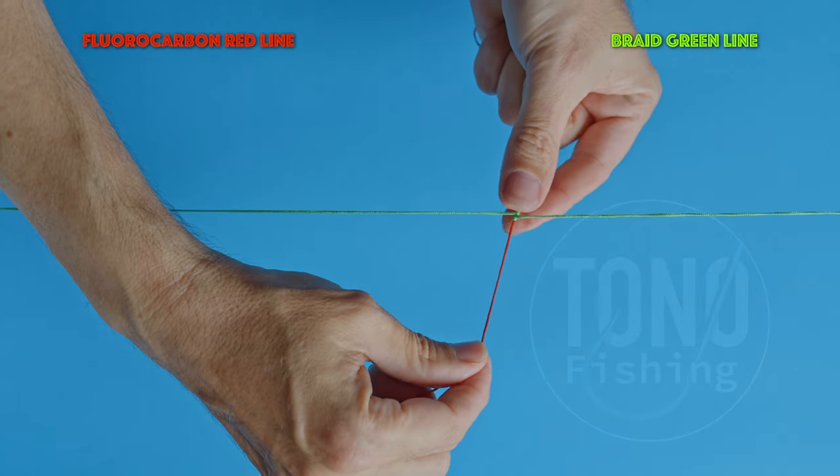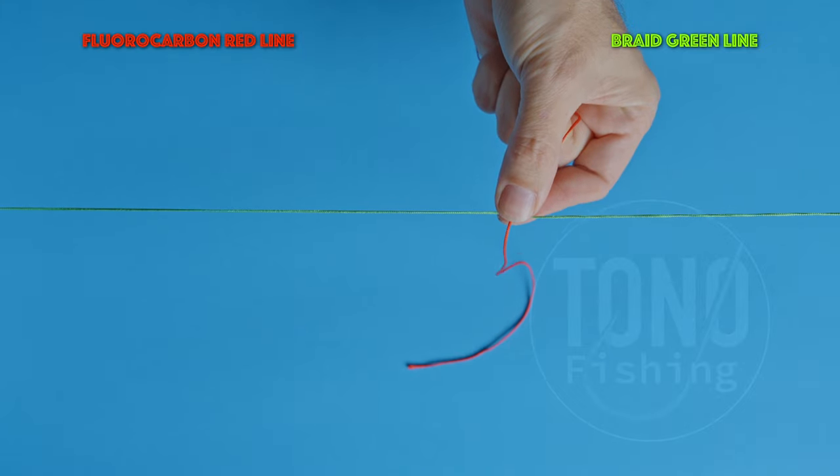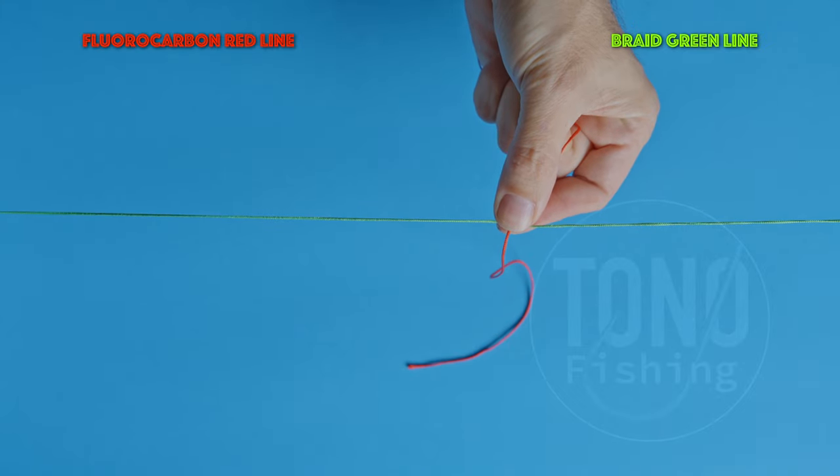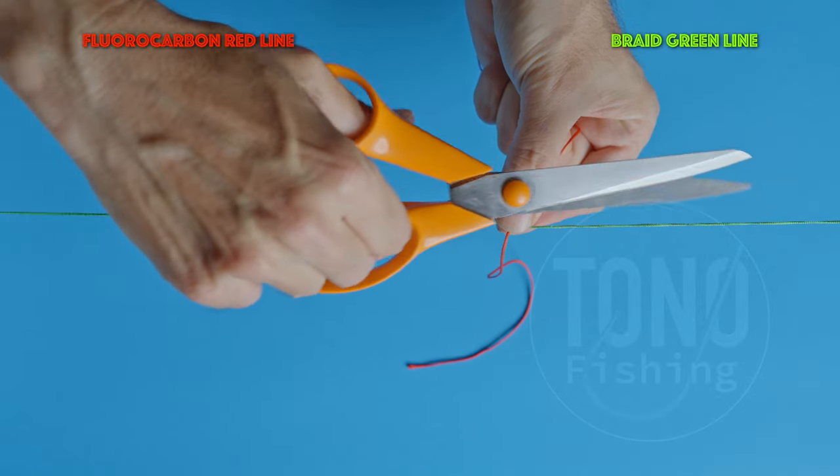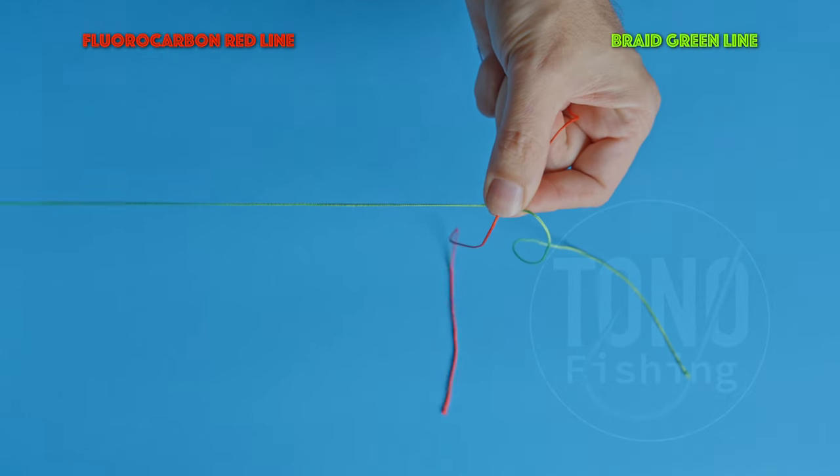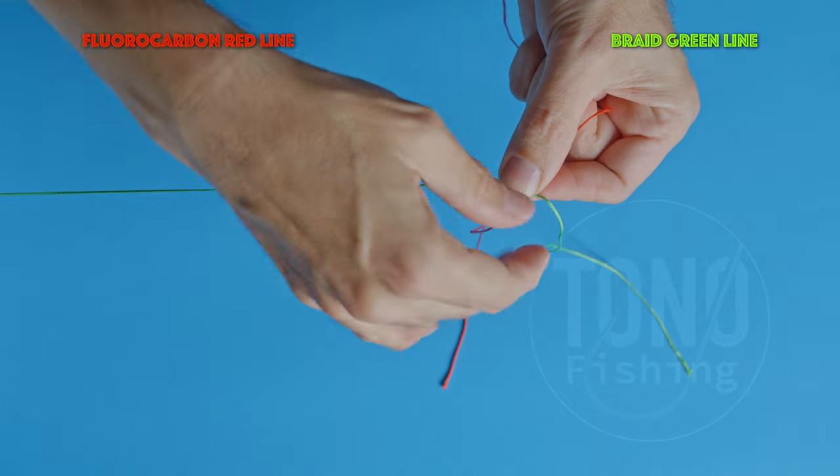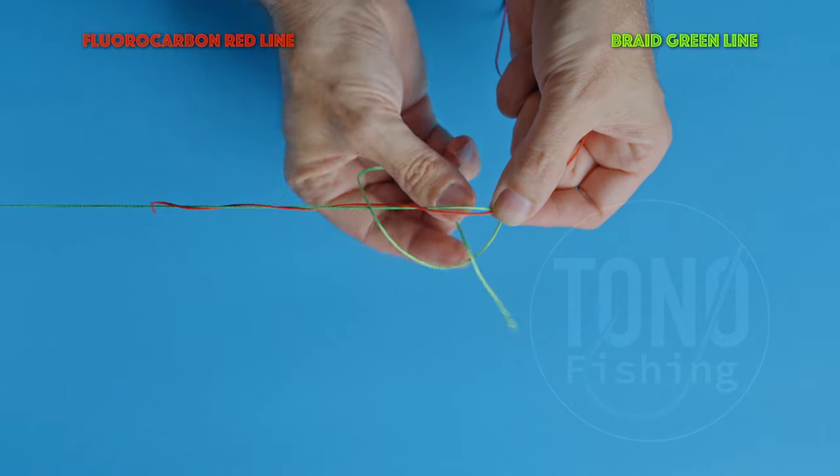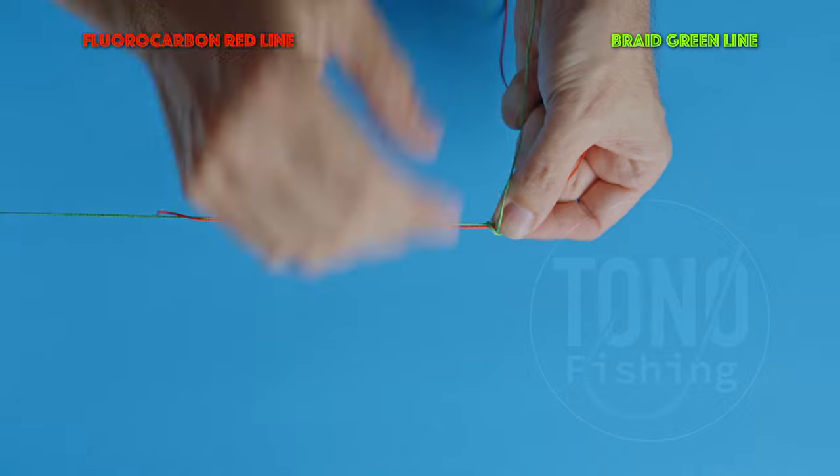Now we will secure our knot with a simple overhand knot. Keep holding the knot with your thumb and index fingers. Cut the braid loop from our doorknob. Do an overknot using this braid tail around the fluorocarbon tail, together with the braid line from the rod. Tighten the overknot, and now you can release your fingers.